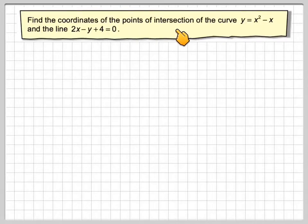Find the coordinates of the point of intersection of the curve y is equal to x squared minus x, and the line 2x minus y plus 4 is equal to 0.